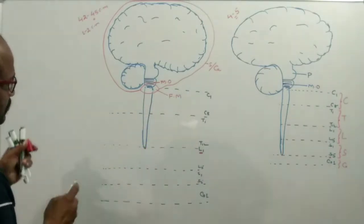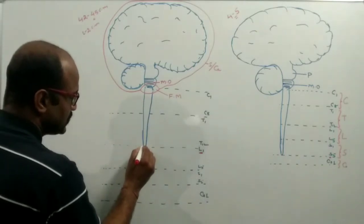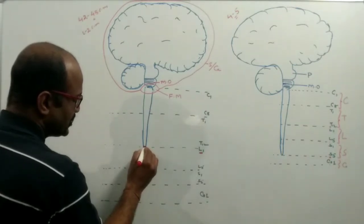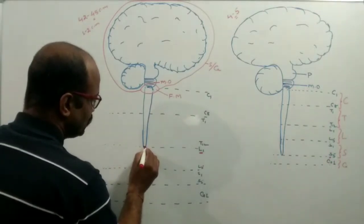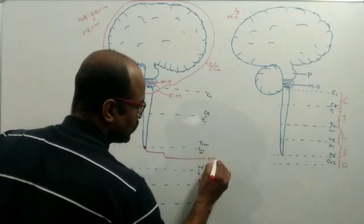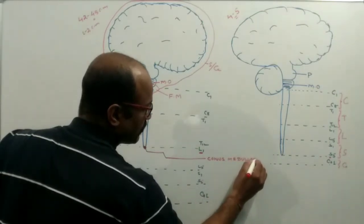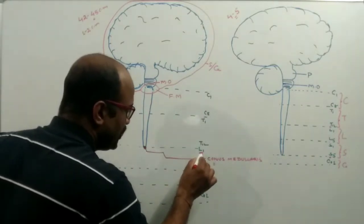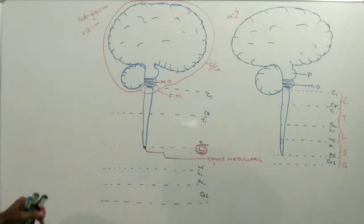At the terminal portion, the spinal cord has a cone-shaped tapering structure known as the conus medullaris. The conus medullaris is present inside the neural canal of the first lumbar vertebra.